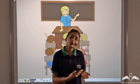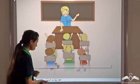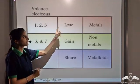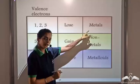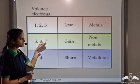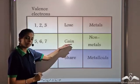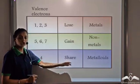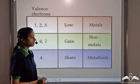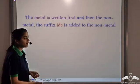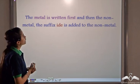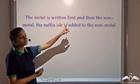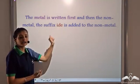Let's see how we read those chemical formulae. We know the elements which have 1, 2, or 3 electrons in the valence shell can easily lose these electrons — these are the metals. Elements which have 5, 6, or 7 valence electrons can gain electrons to complete their octet — these are the non-metals. Elements with 4 valence electrons can share electrons — these are the metalloids. Whenever a compound has a metal and a non-metal, the metal is written first, followed by the non-metal, and the suffix "-ide" is added to the non-metal.